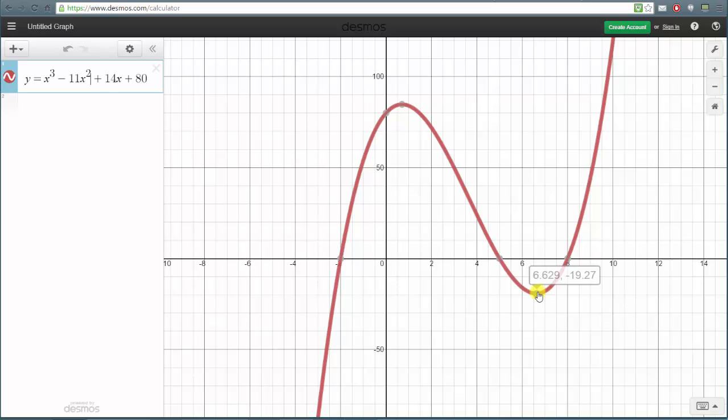This high point gives us the local maximum, where the x-coordinate is the location and the y-coordinate is the local maximum value. So our function f(x) has a local maximum at approximately x equals 0.704 and a local maximum value of approximately 84.75.